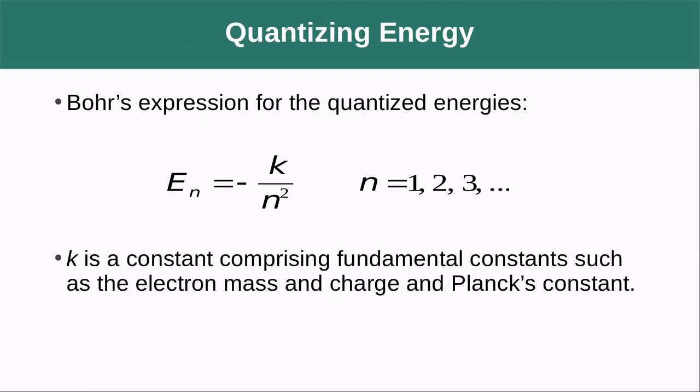And he came up with this expression for that, where he says that the energy values that are possible are all going to be some constant divided by n squared. They're always going to be negative in this scenario. And then he actually, instead of just saying, well, the k value is this, he started to develop an idea of what this k value, where it was coming from. So he had some basic fundamental constants, such as the electron's mass, its charge, Planck's constant. These all comprise k. So he gave us some idea where that k value was coming from, as opposed to like Rydberg or Balmer.